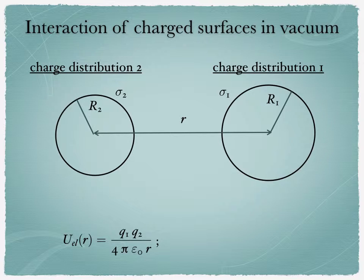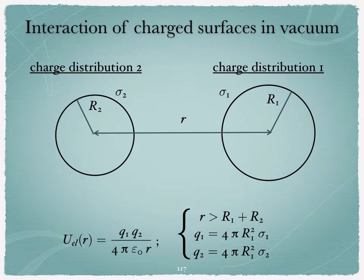This equation, if you have two such charge distributions with different radii, is valid provided r, the center-to-center distance, is bigger than r1 plus r2. Here q1 and q2 are the total charge respectively of distribution 1 and distribution 2, and they are related to simply the area of the various spheres times the surface charge density.